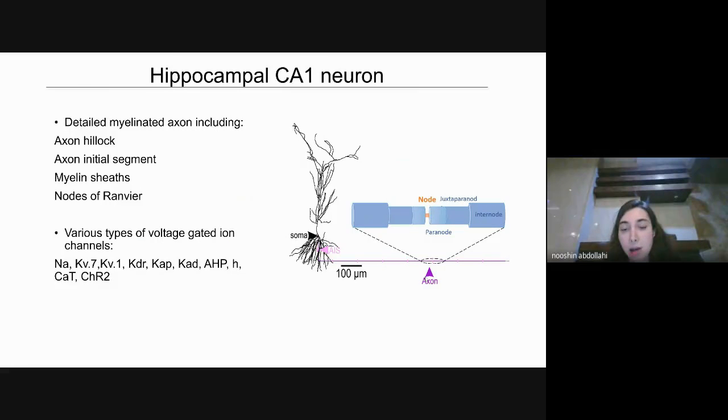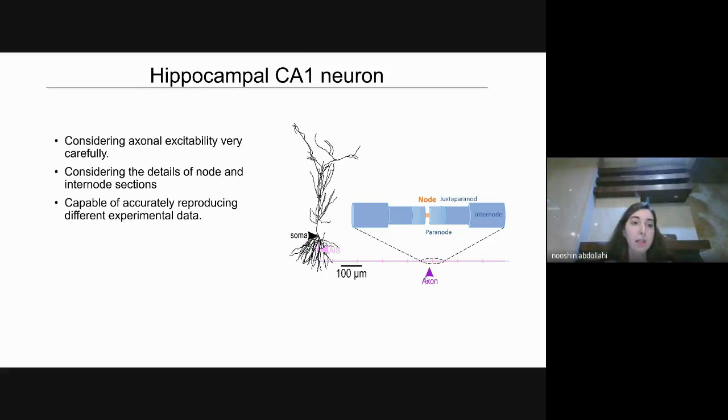The axon of my model includes axon hillock, axon initial segment, nodes, paranodes, juxtaparanodes, and internodes. And there are various types of voltage-gated ion channels in the model. Some of the features of the model are that we have considered axonal excitability very carefully, and also the details of node and internode sections, and the model is capable of accurately reproducing different sets of experimental data.